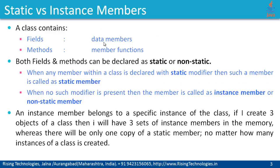A class contains few data members and few member functions. Data members are called as fields, member functions are called as methods. Both these fields and methods can be declared as static or non-static. When any member within a class is declared with the static modifier, that member is called a static member. When no such modifier is present, the member is called an instance member or simply non-static member.